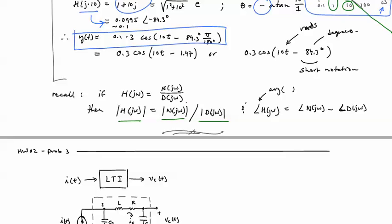In addition, if N or D are factored, say (s+3) times (s+2), you can take the magnitude of (jω+3) times the magnitude of (jω+2). You don't have to expand that into a quadratic term and then substitute j omega and then find the magnitude. It's much easier to leave it factored.